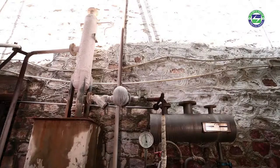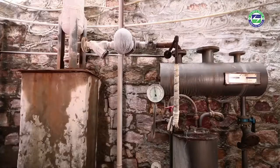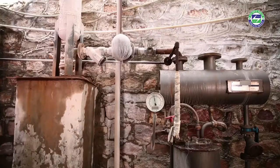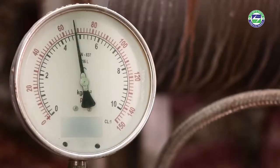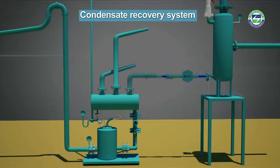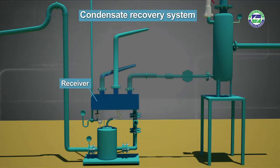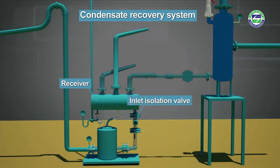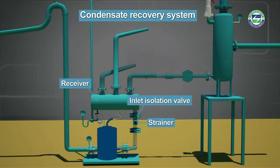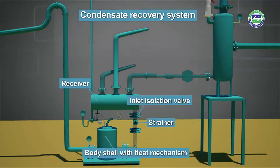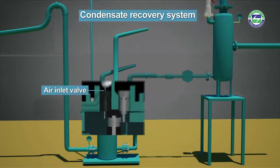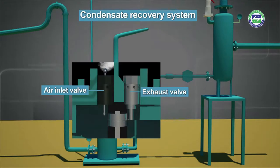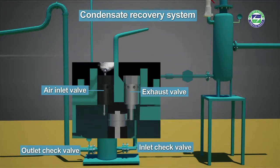The pressure-powered pump unit is the most significant component of the system. The unit consists of a receiver, an inlet isolation valve, a strainer, the body shell containing a float mechanism, an air inlet valve, an exhaust valve, and inlet and outlet check valves.